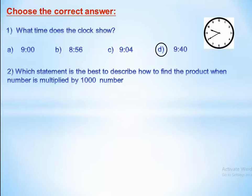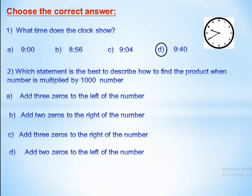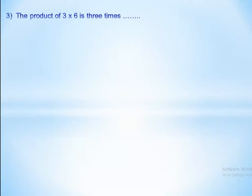Which statement best describes how to find the product when a number is multiplied by 1,000? 'Add three zeros to the left' — no, because zeros on the left have no meaning. 'Add two zeros to the right' — no, because we multiply by one thousand so we need three zeros. 'Add three zeros to the right of the number' — yes, this is the correct answer. The product of 3 times 6 is 18.